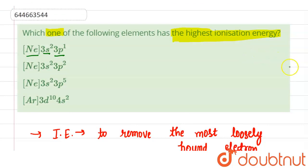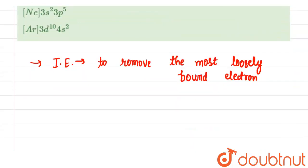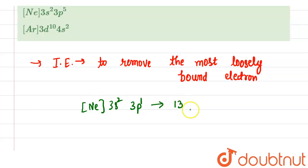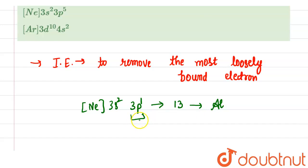The first option is [Ne] 3s2 3p1. This electronic configuration corresponds to atomic number 13, whose element name is aluminium. As we can see, in the last shell there is a p orbital with one electron, which is the most loosely bound electron. So it requires less energy to remove that electron and form a cation.